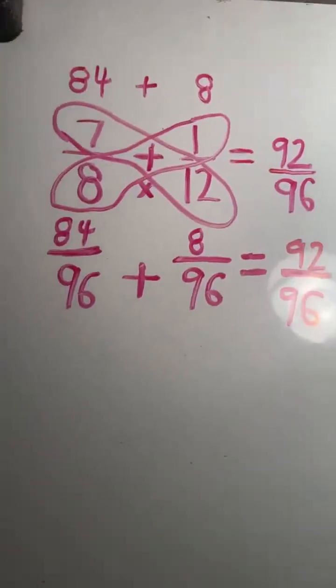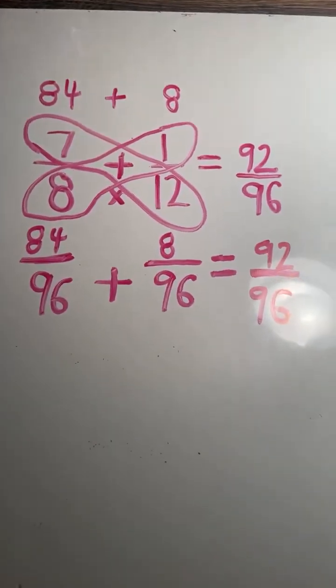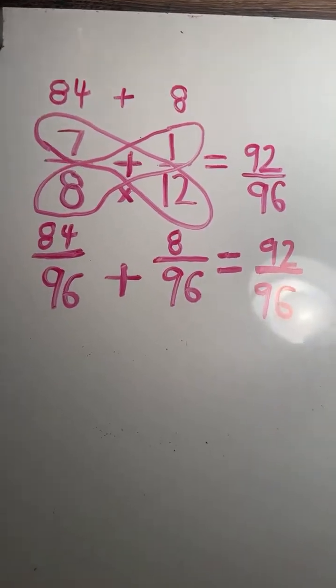So again, 92 over 96 could be reduced. It's not in lowest terms, but we're going to keep that as the final answer just for this video.